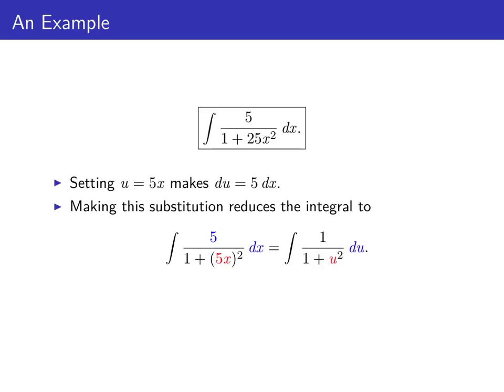So we reduce the integral of 5 over 1 plus 5 x squared dx to the integral of 1 over 1 plus u squared du.